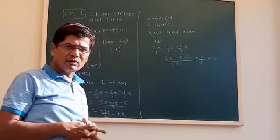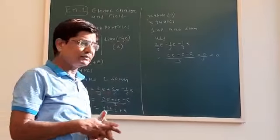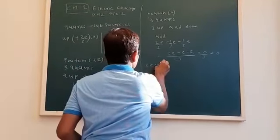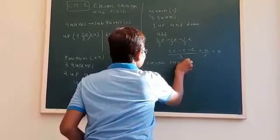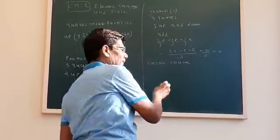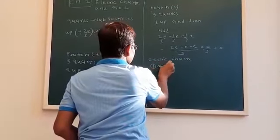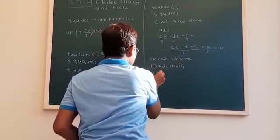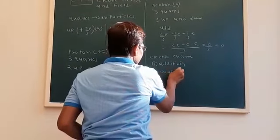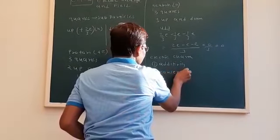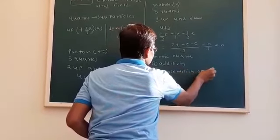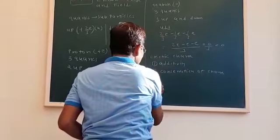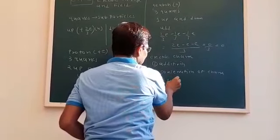Next we will see about the basic properties of electric charge. The first property is additivity. The second is the conservation of charge. And the third is the quantization of charge.